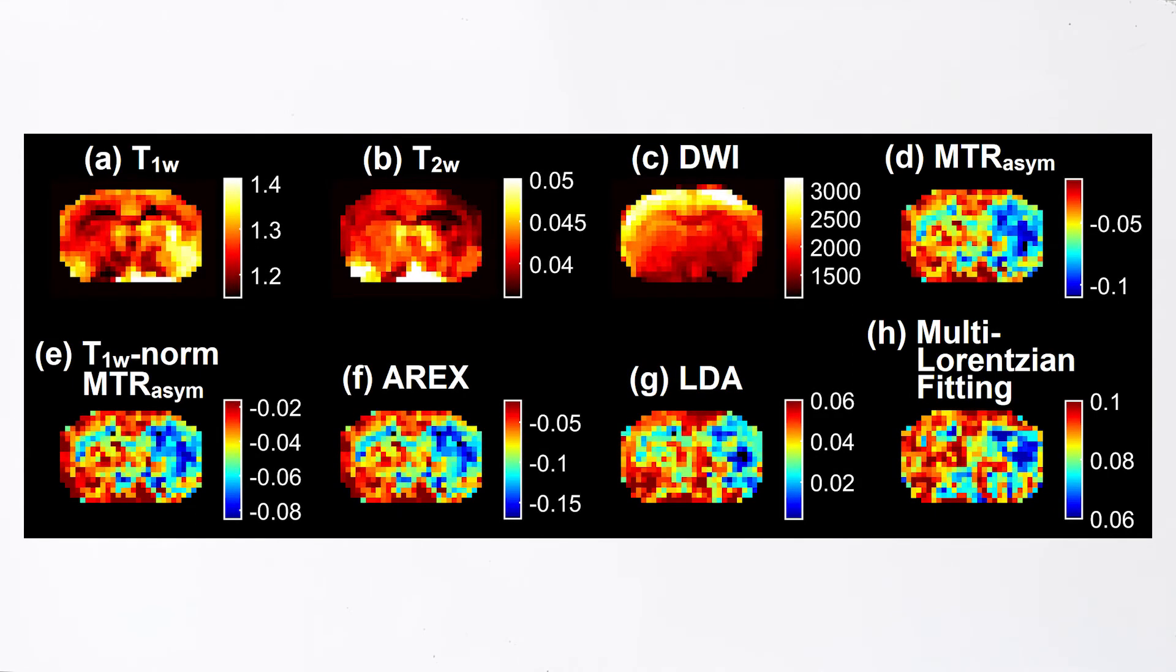It can be observed that the APT images were able to distinguish between normal-appearing tissue and the ischemic region. In general, the APT signals within the ischemic tissue were hypo-intense compared to normal-appearing tissue, as indicated by the white arrows in each of the APT images. Since APT signal is correlated with pH, the reduced signal in the ischemic tissue indicated a reduction in the intracellular pH, owing to tissue acidosis.